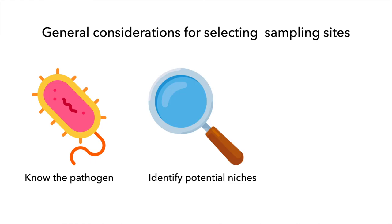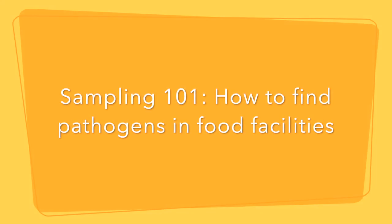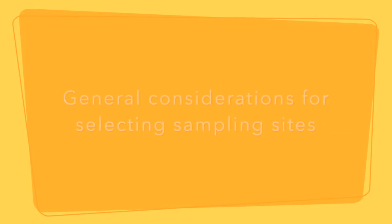Now you know the main things you need to do when selecting sampling sites: know the pathogen, identify potential niches, and keep your eyes open and look everywhere. You are now prepared to select appropriate sampling sites.